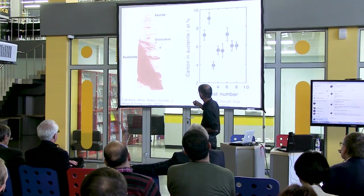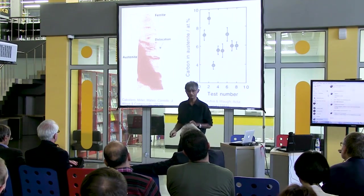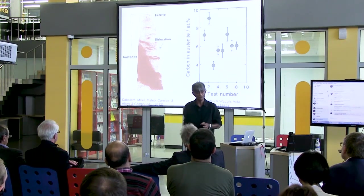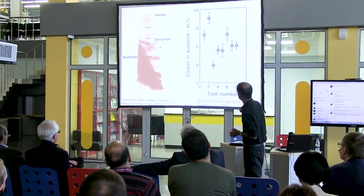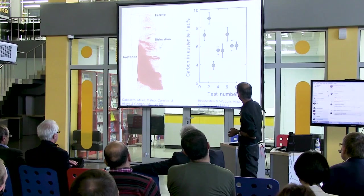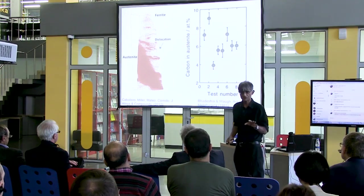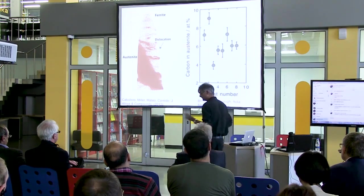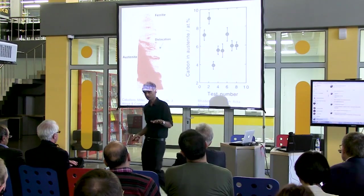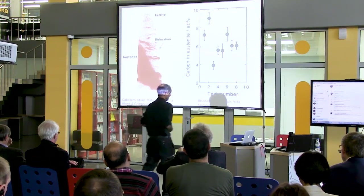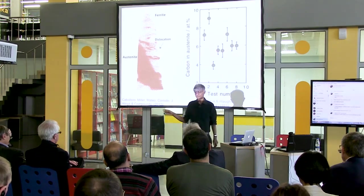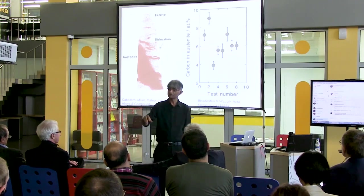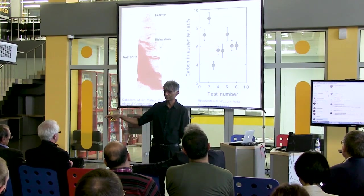Распределение атомов углерода в феррите и в аустените — в аустените углерода гораздо больше. Видны дислокации, потому что атомы углерода идут в места дислокаций. Концентрация даже в этих масштабах непостоянная. Ещё раз хочу подчеркнуть: идёт неравномерное распределение растворённых компонентов в материале.